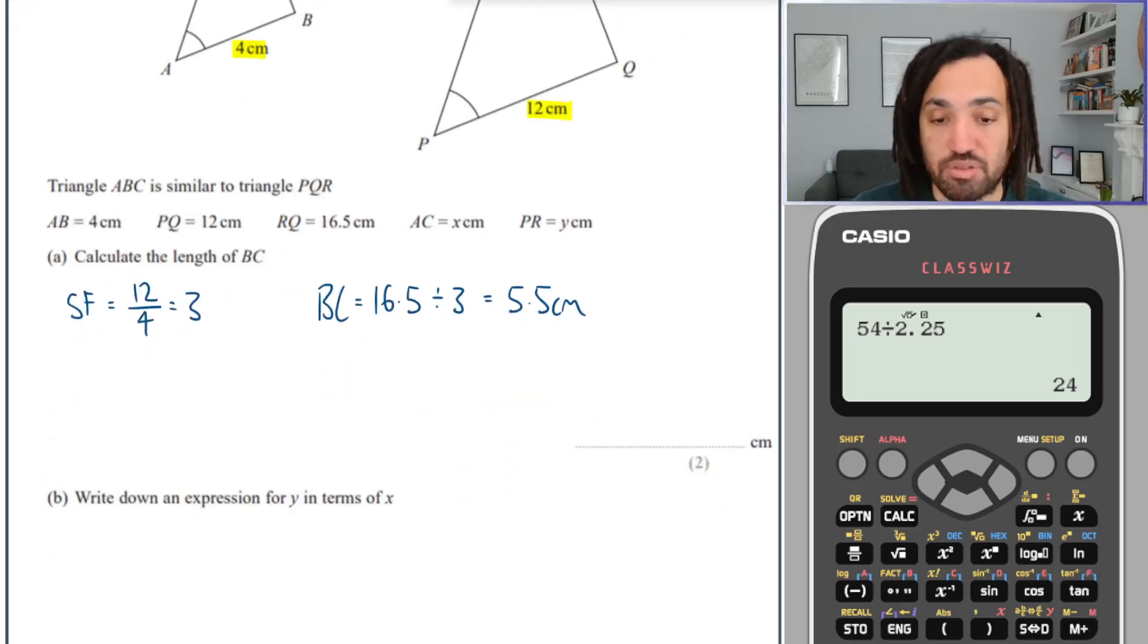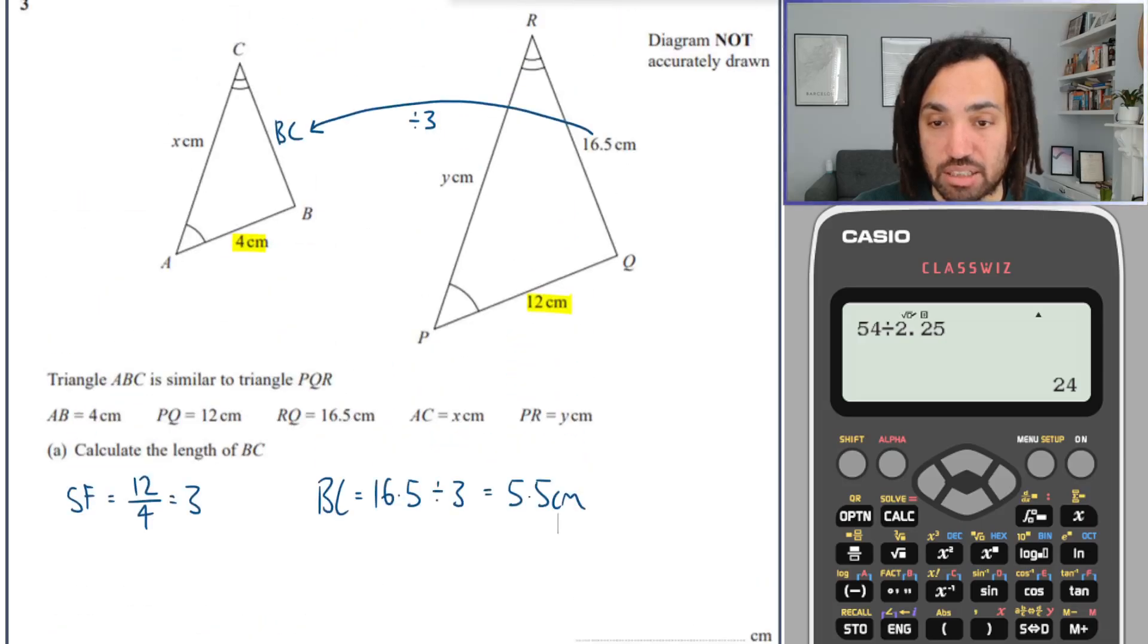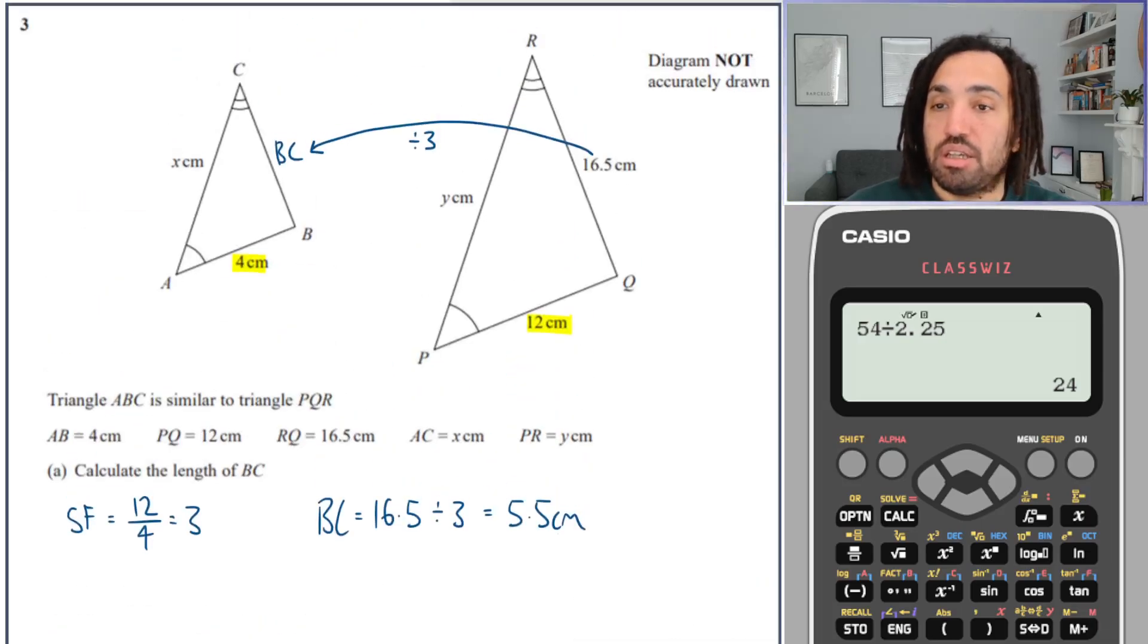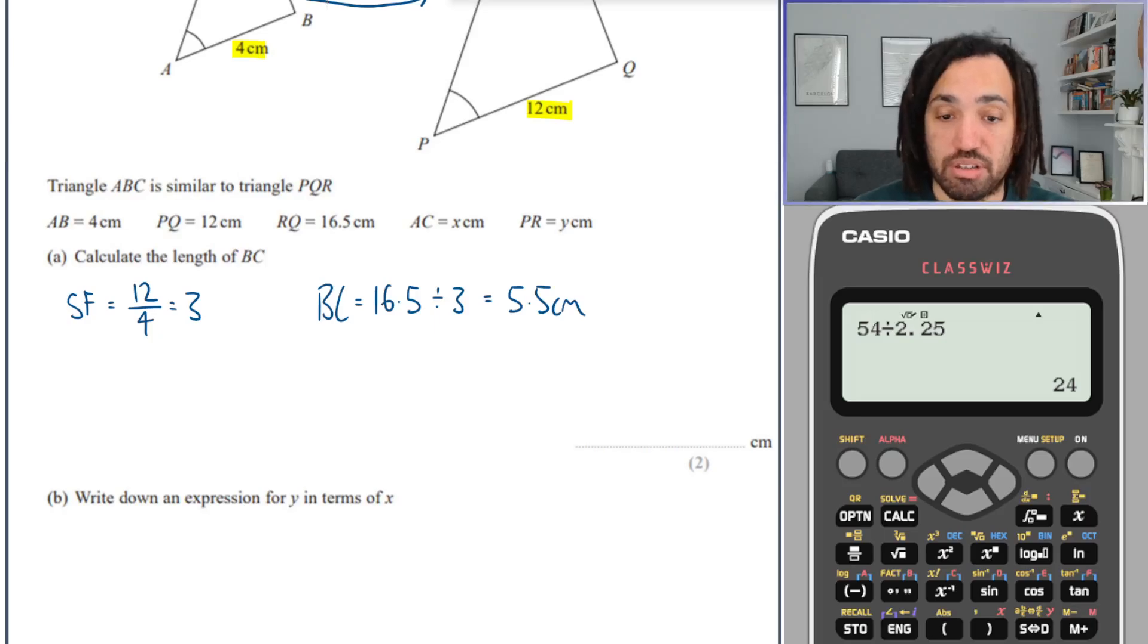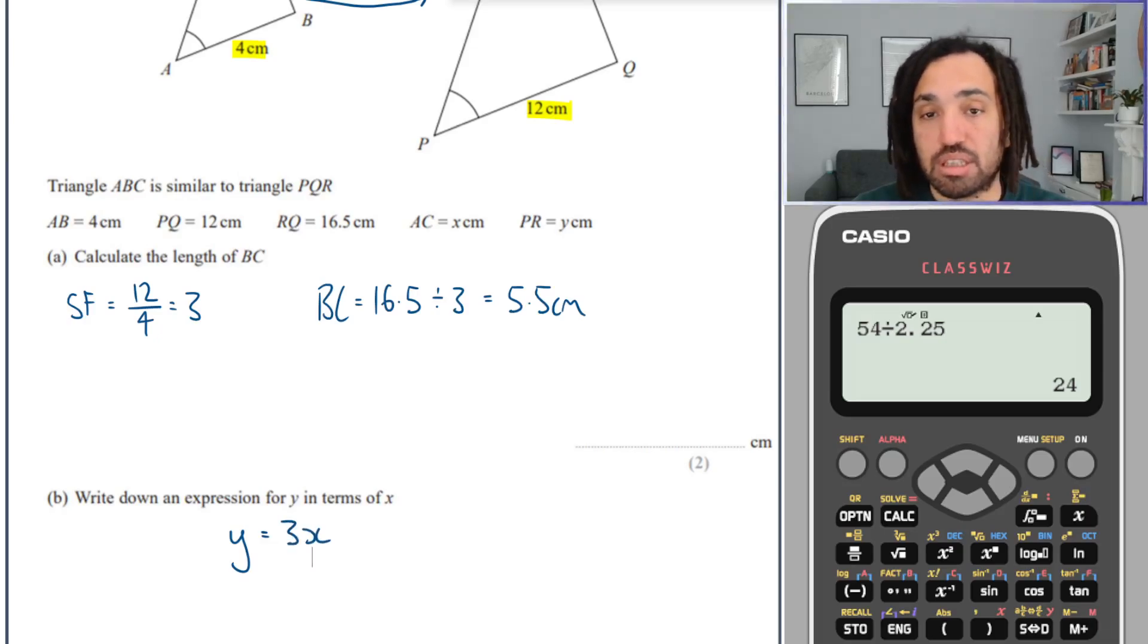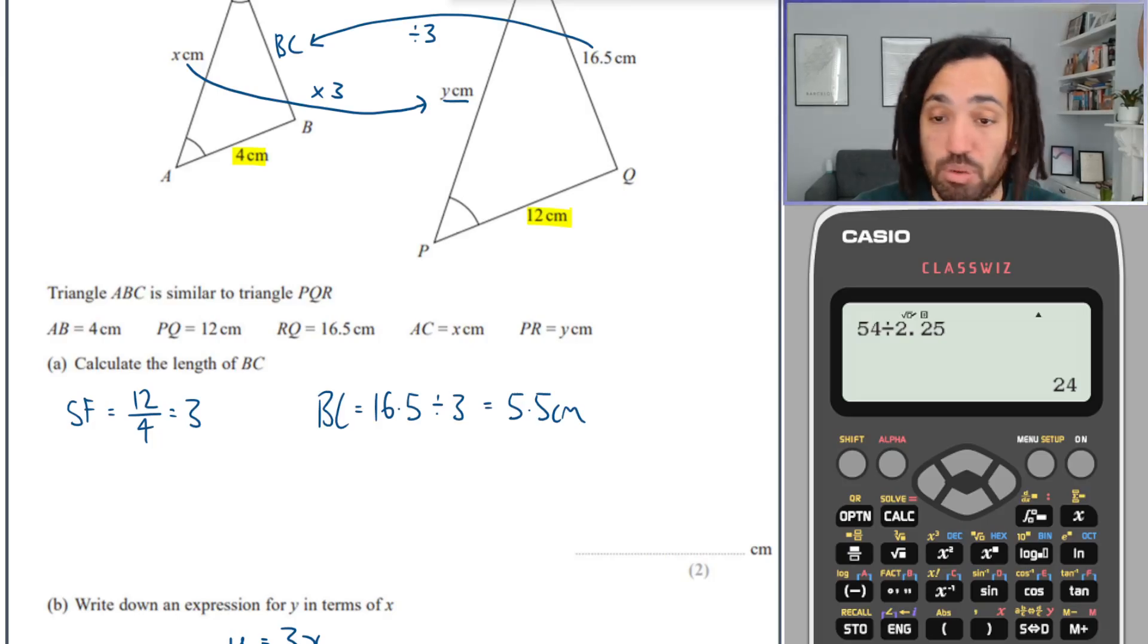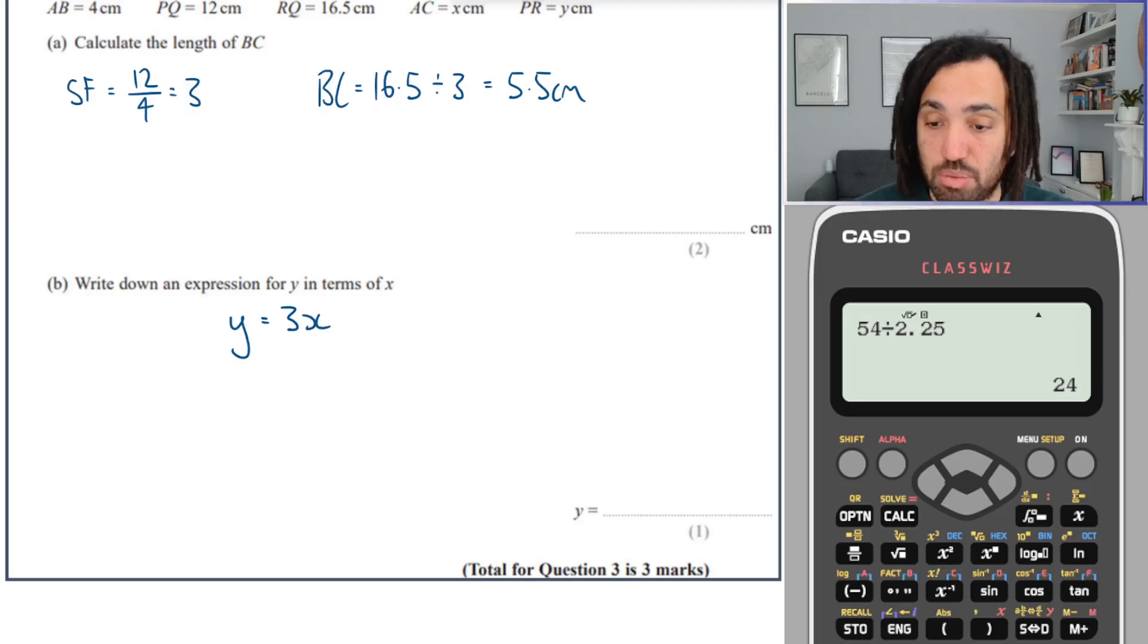Next question says write down an expression for y in terms of x. So y is here, and in order for me to find y I would need to take x and multiply it by the scale factor. So y is equal to 3 multiplied by x. That is my expression for y in terms of x. Lovely.